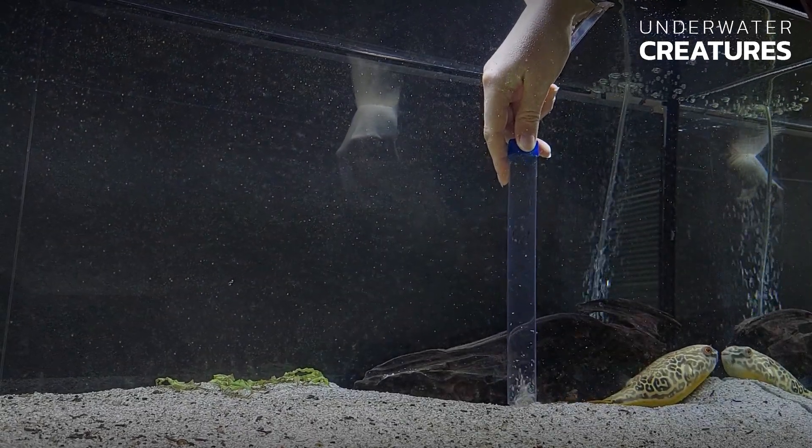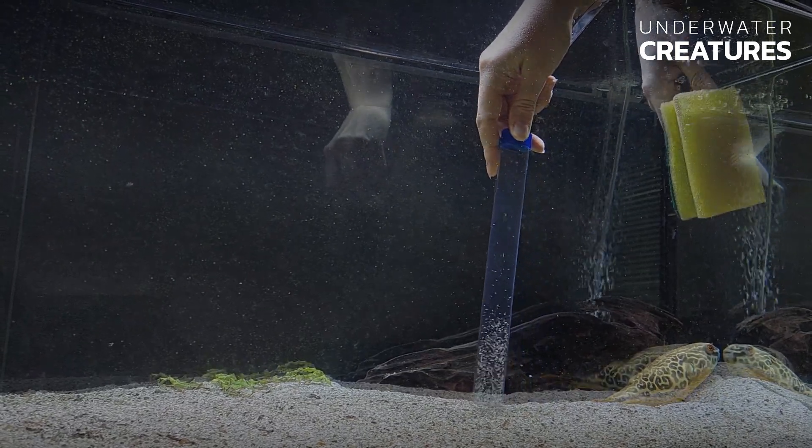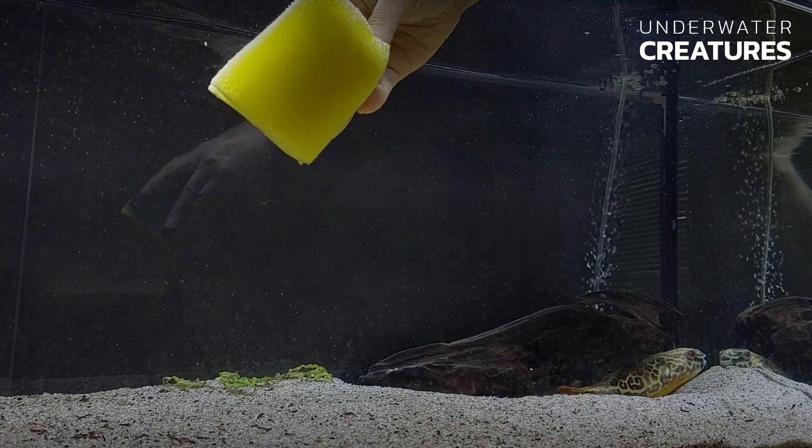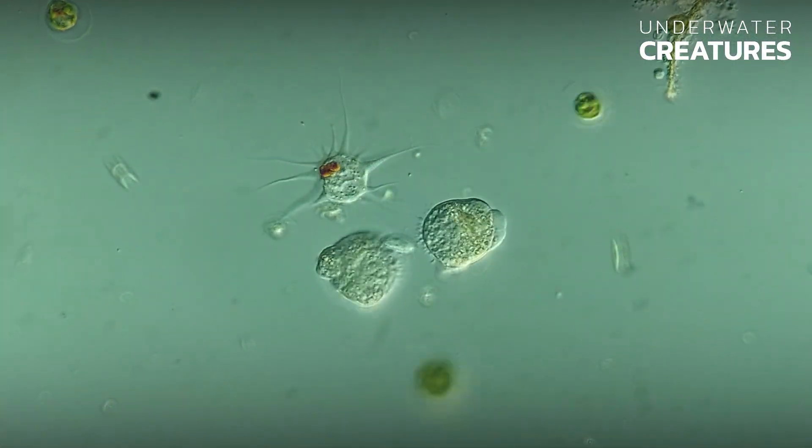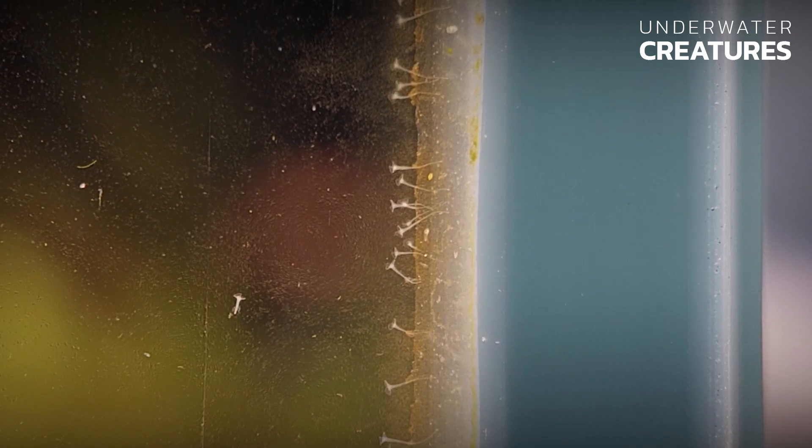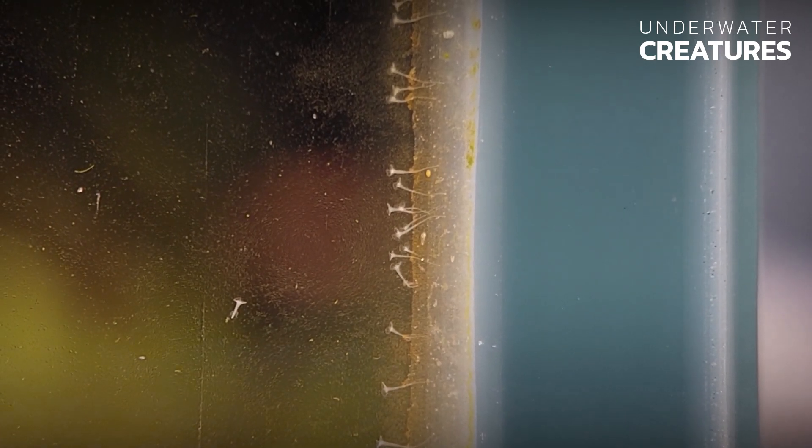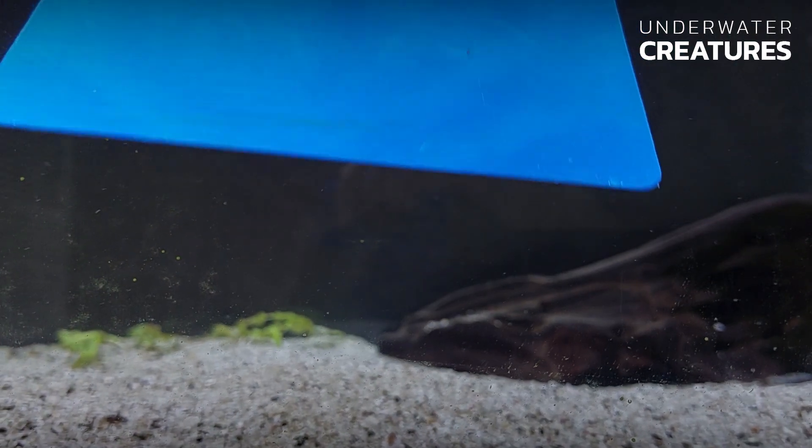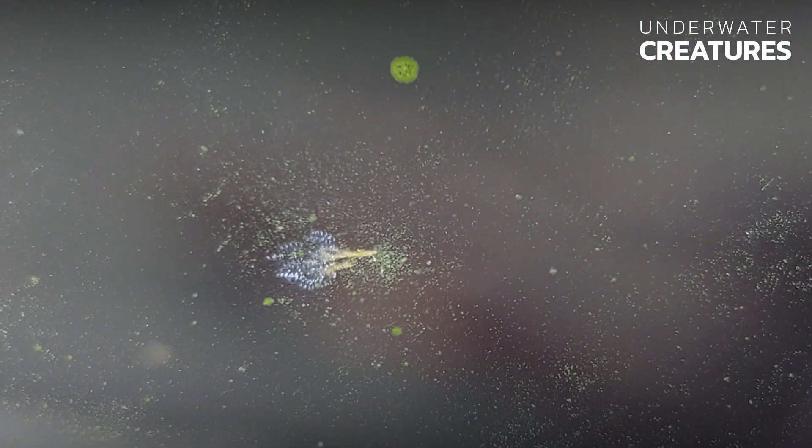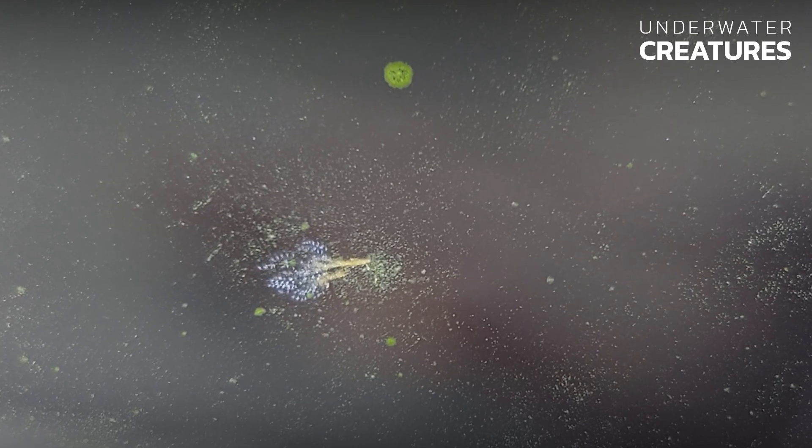Every aquarist regularly cleans the aquarium by changing the water and wiping the glass with a soft sponge. Protozoal microorganisms, algae, micro worms and other creatures form communities that continuously grow on the glass and decorative items of our aquarium. This unsightly dirt that we mercilessly scrub off may conceal secrets that are only revealed under a microscope.